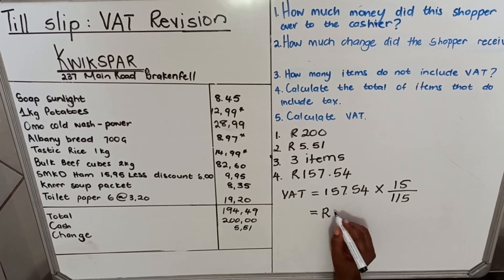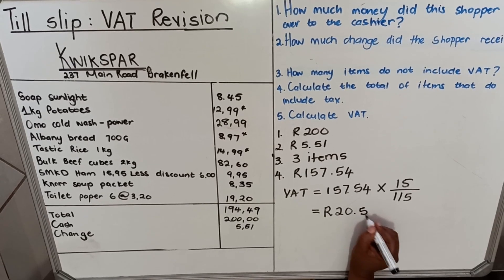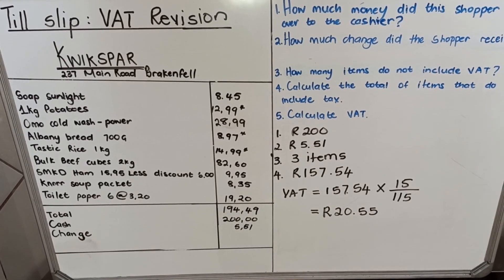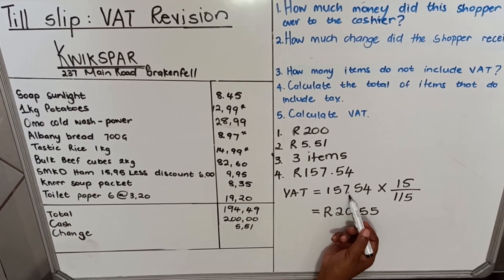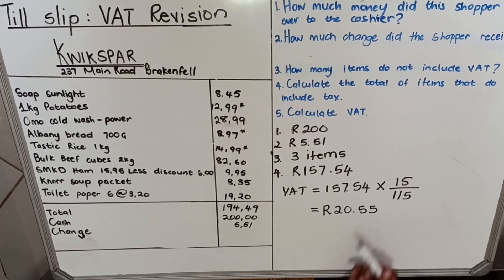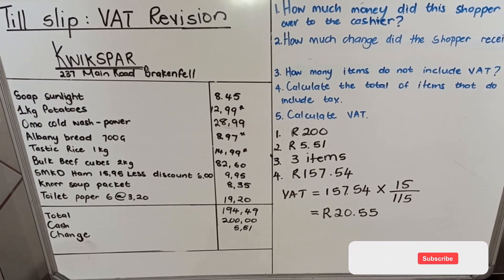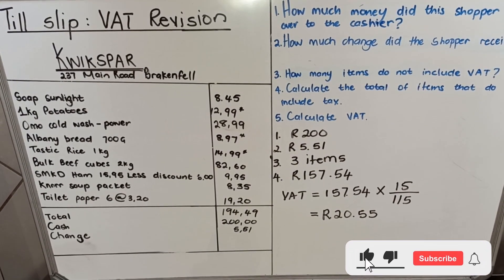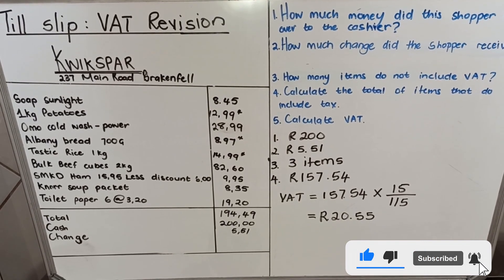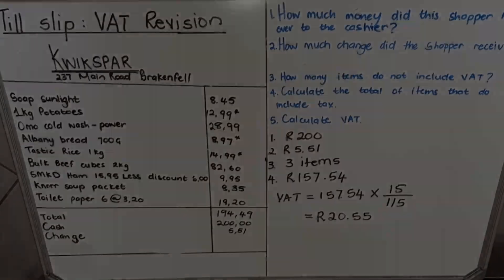So the VAT on this item is 20 rand 55 cents. In this total amount of 157 rand 54 cents, 20 rand 55 cents is the VAT, but we've already paid it. You normally don't see the VAT separated when you are shopping. This is how we deal with till slips. Thank you for watching — this is the end of our lesson.